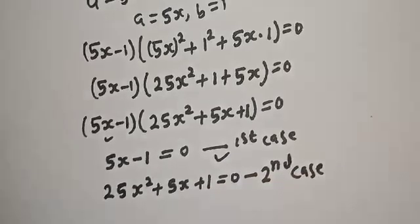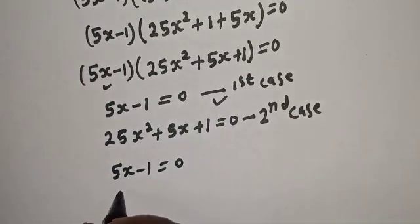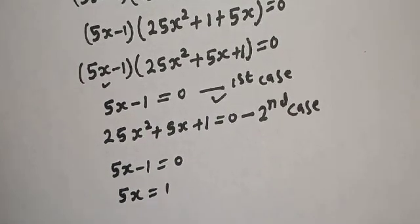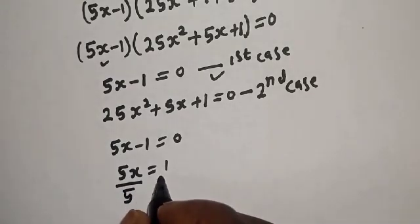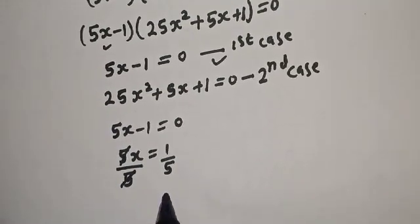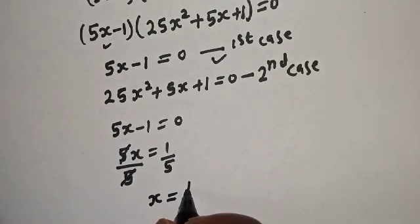From the first case, 5s minus 1 is equal to 0, so 5s is equal to 1. Dividing both sides by 5, we get s is equal to 1 over 5.